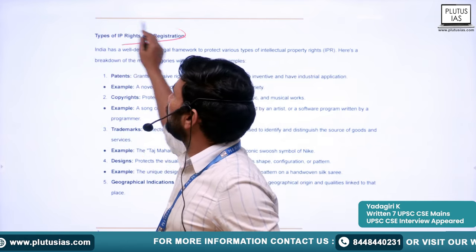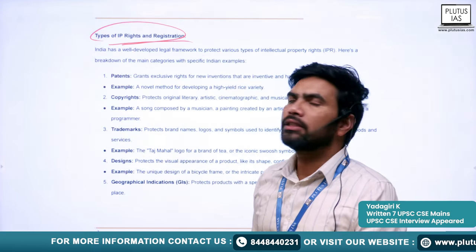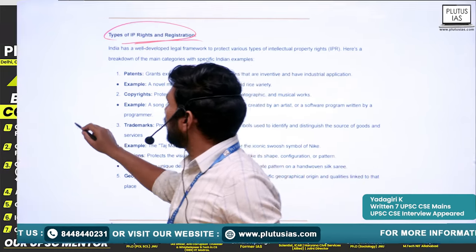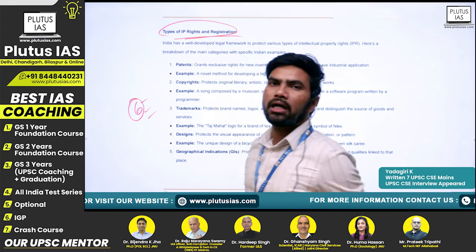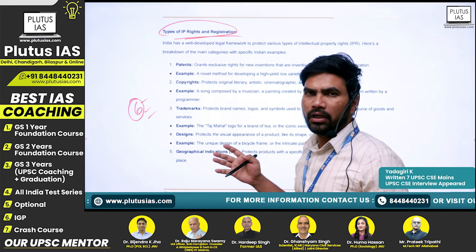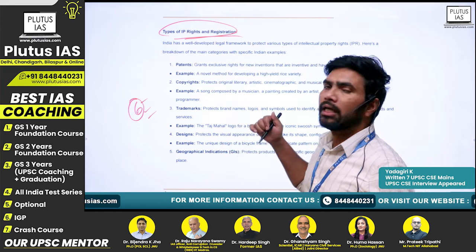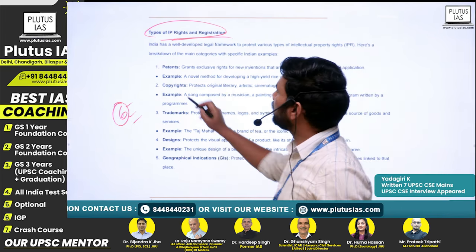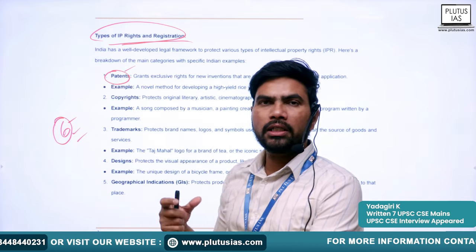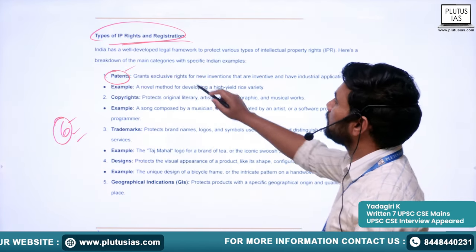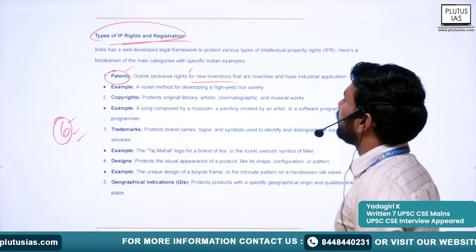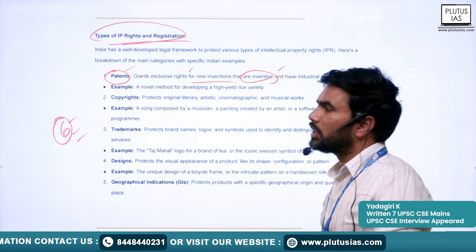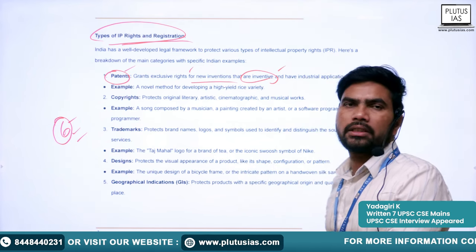There are six types of intellectual property rights, and we will see examples for each. The first important type is patent. Patents grant exclusive rights for new inventions that are inventive in nature and have industrial application. For example, a novel method for developing a high-yielding rice variety, or preparing a medical formula to treat a particular disease.